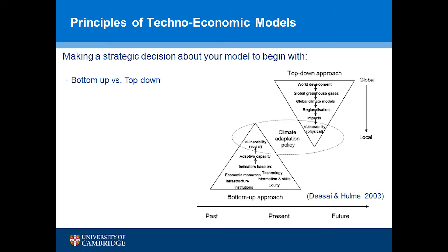Getting into the meat of it — principles of these energy economy models. As with all models, you need to make a decision about what's relevant, and as such it will affect your results. One dimension is bottom-up versus top-down. Bottom-up is more technology specific — it takes into account the technologies we have, how they're going to learn and improve over time, and generates a quantity of how much energy we can actually produce. Top-down is more macroeconomic, depending on socioeconomic factors, and is surprisingly more computationally intensive because of economic feedbacks. Bottom-up is what we'll mainly focus on today.